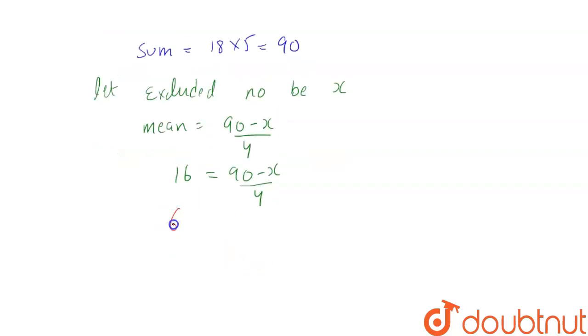Now, 16 times 4, 64 is equal to 90 minus x, from where x comes out to be 26. This is our excluded value.